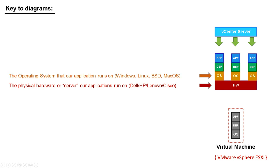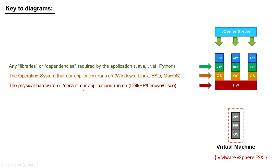Next thing we've got on top is the operating system, or OS. The operating system — typically something like Windows, Linux, BSD, or Mac OS — is the thing that the application is going to run on top of. Before we can run the application, some applications require things called libraries or dependencies, like Java, .NET framework, or Python. That's not the actual application itself, it's just the dependency — something it needs to run.